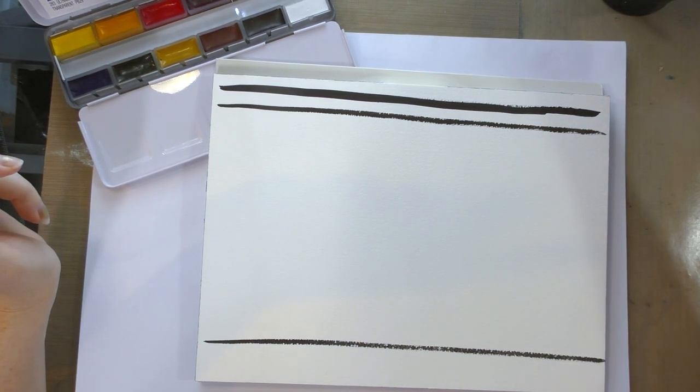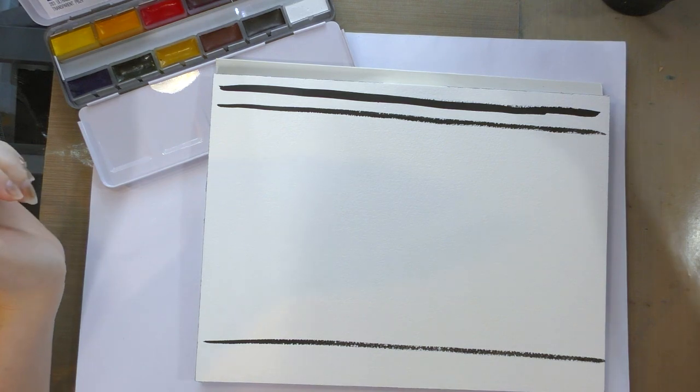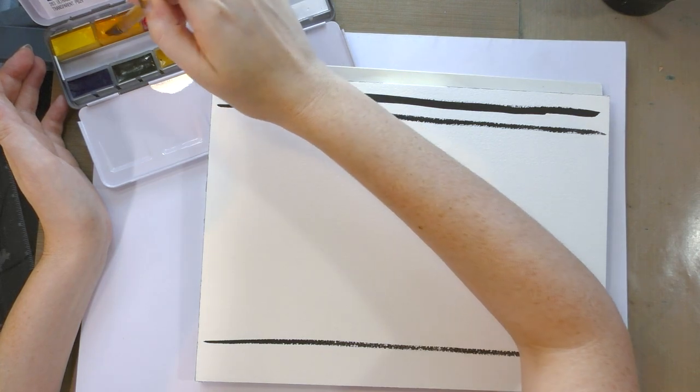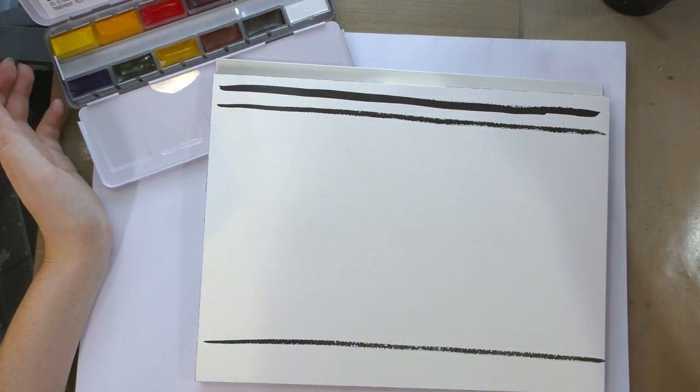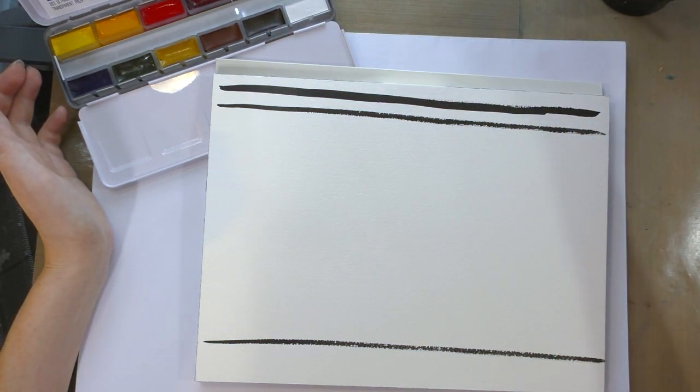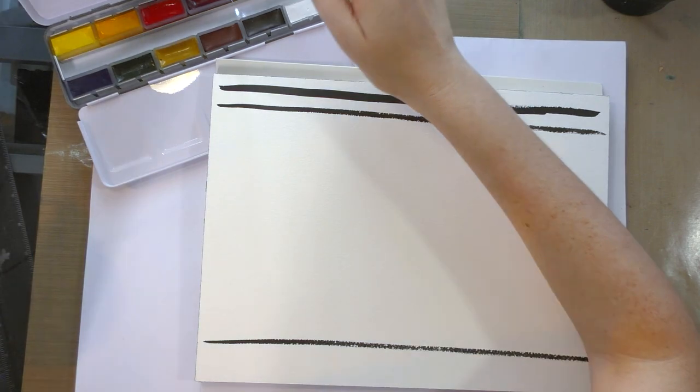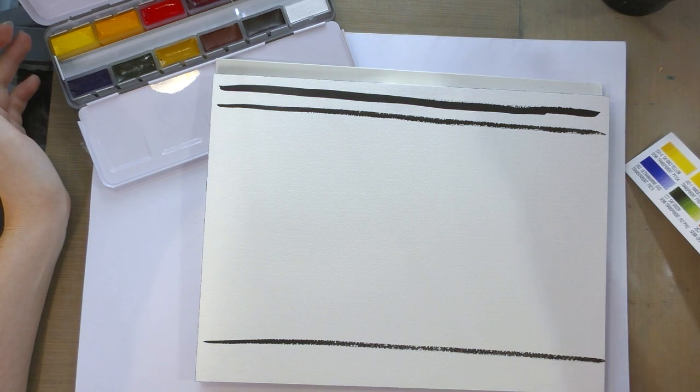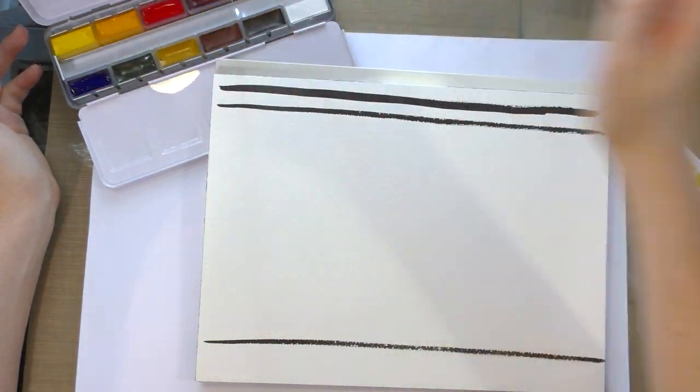So our lines have had a chance to cure. I am going to use a sumi brush for this and I'm just going to brush some water onto each of these whole pans. I'm so used to working with half pans that I keep misspeaking. I apologize if that's causing any confusion. I know you guys are smart though, so hopefully not.